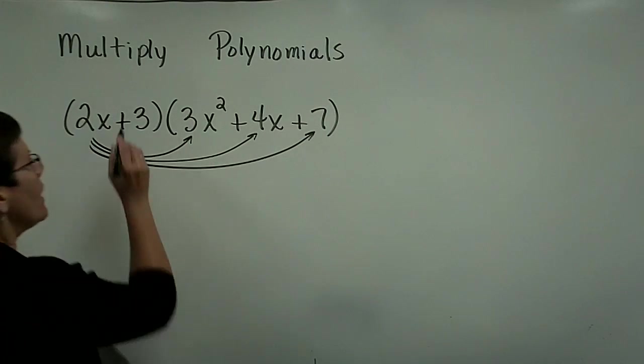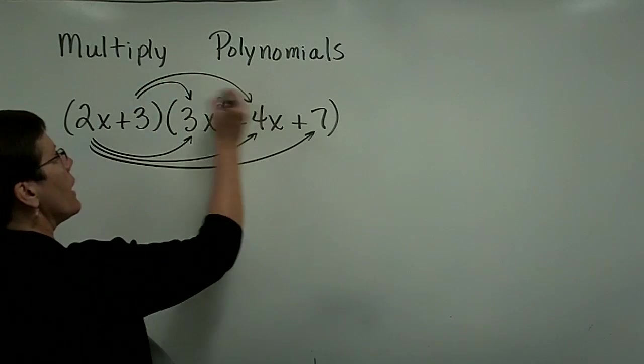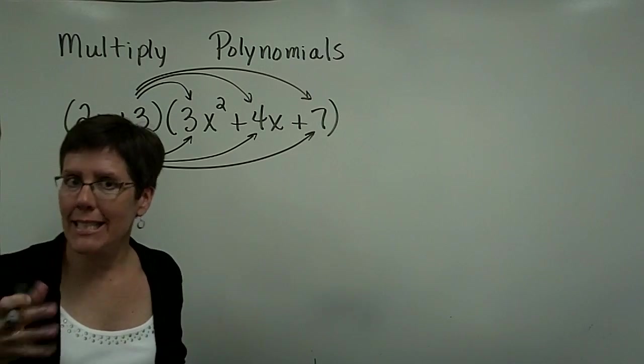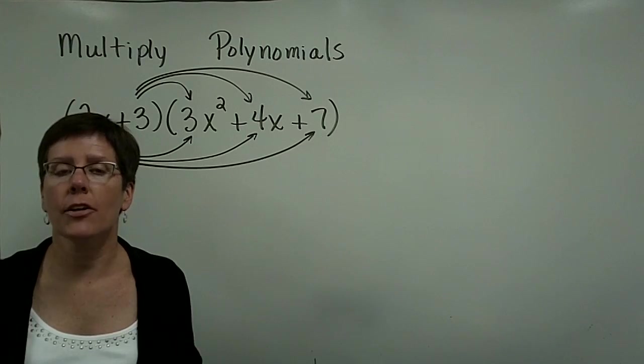And then that 3 has to be multiplied by the 3x squared, the 4x, and the 7. You're going to get six terms, and then you're going to have to put the like terms together to finish the process after you've distributed it.